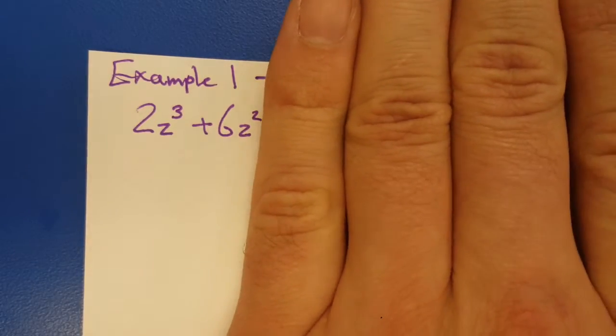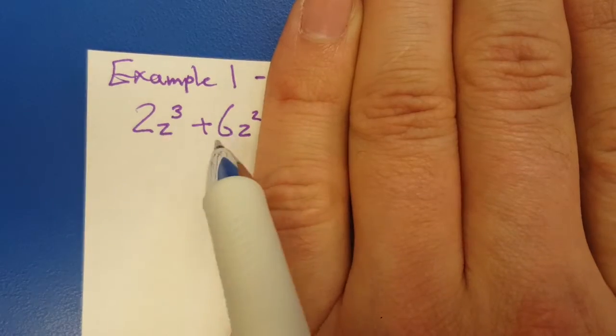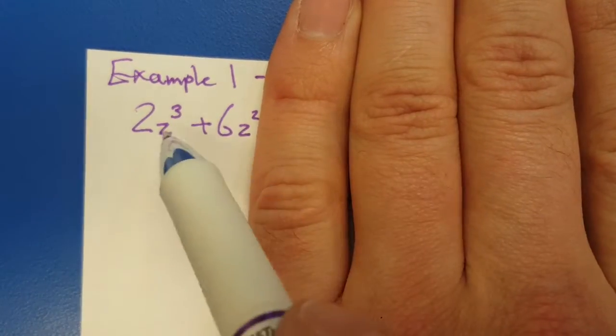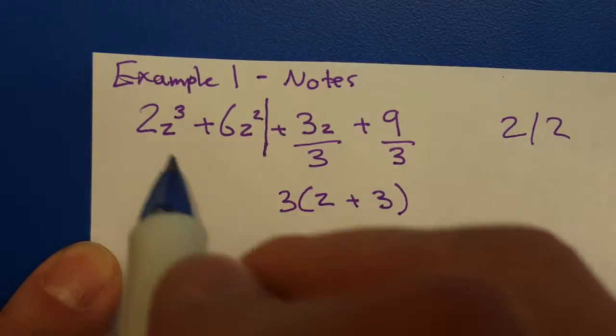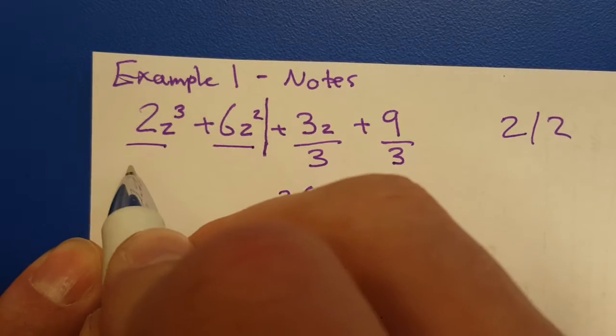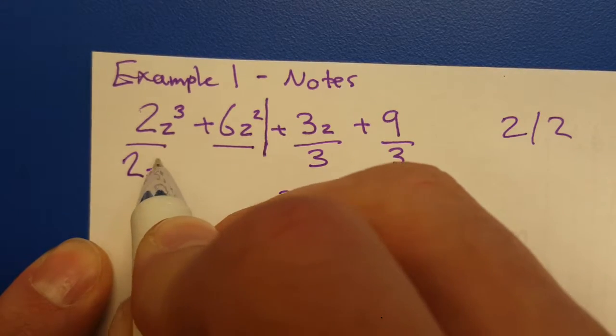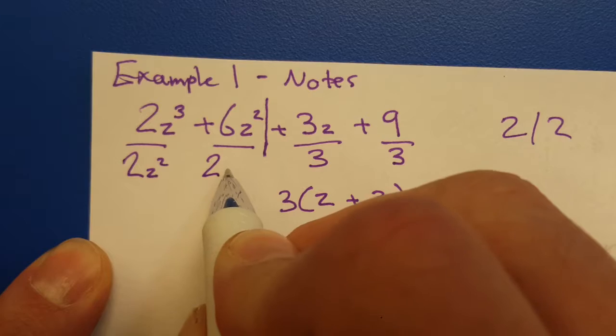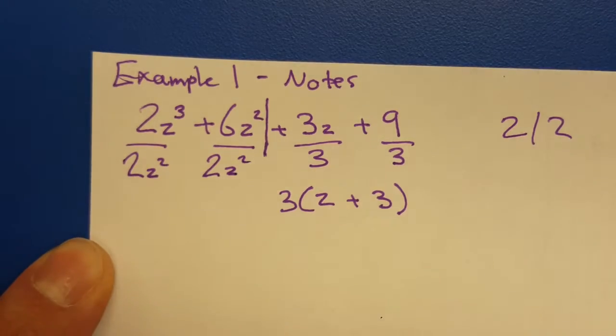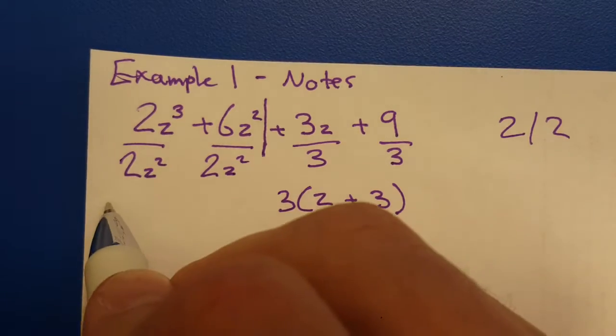Now let's focus on the left side. What can I take out of a 2z cubed and a 6z squared? I think I can take out a 2z squared. Sorry my twos and my zs look the same. Try to get more of a loop in there. All right, that's what I can take out. Factor it out. Rewrite it.